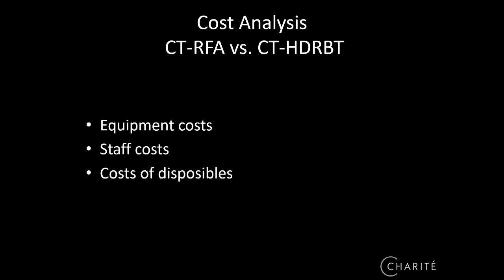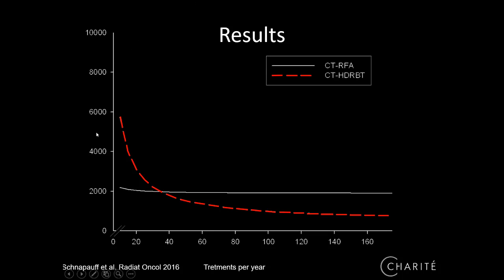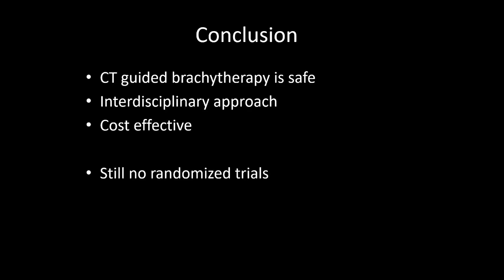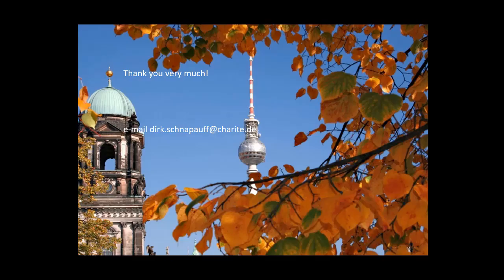Regarding costs, although the procedure is complex — requiring a radiation room, CT, and staff from both radiation oncology and radiology — the disposables are very cheap. When calculated together, treating just 38 patients per year reaches the break-even point, making CT-guided brachytherapy cheaper than RFA since there are no expensive probes. This is why it is not very interesting for industry, making the technique more university-driven and not yet widespread. In conclusion, we believe it is safe, effective in an interdisciplinary approach, and very cost-effective, with patients clearly benefiting — though we have no randomized trial and limited industry support.